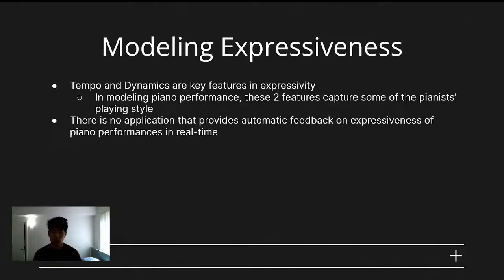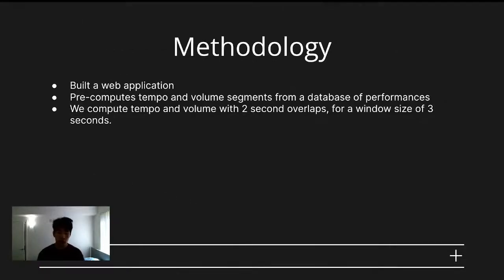These features were also interesting to explore, as no other application that we know of provides automatic feedback on these two particular features for piano performance evaluation. To build an interface that is easy to distribute and build, we designed a web application that streams microphone data to a Python backend server, which does analysis in real-time and sends back relevant feedback. The Python server is sourced with tempo and volume segments from a database of performances by great pianists. We then compare the tempo and volume of the music being streamed from the browser to those of the corresponding song in the database.